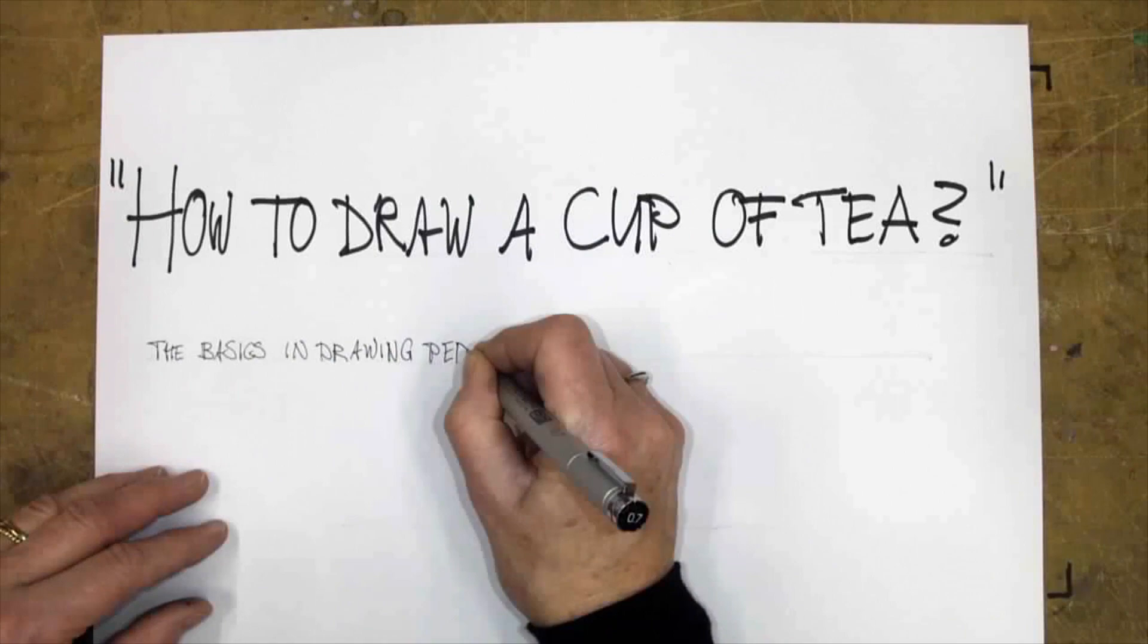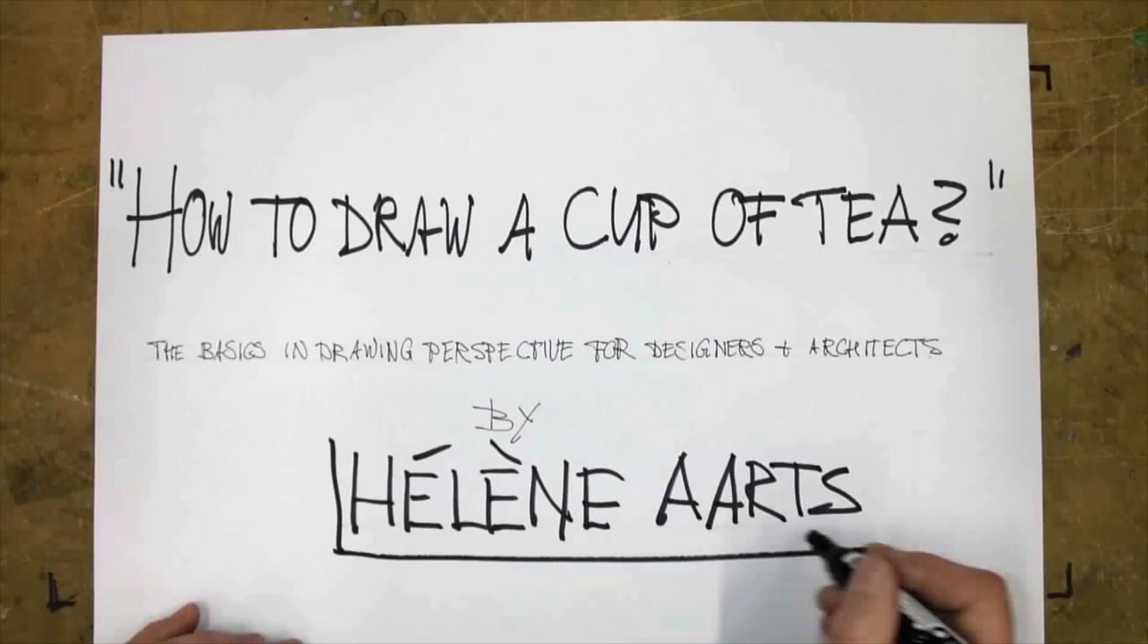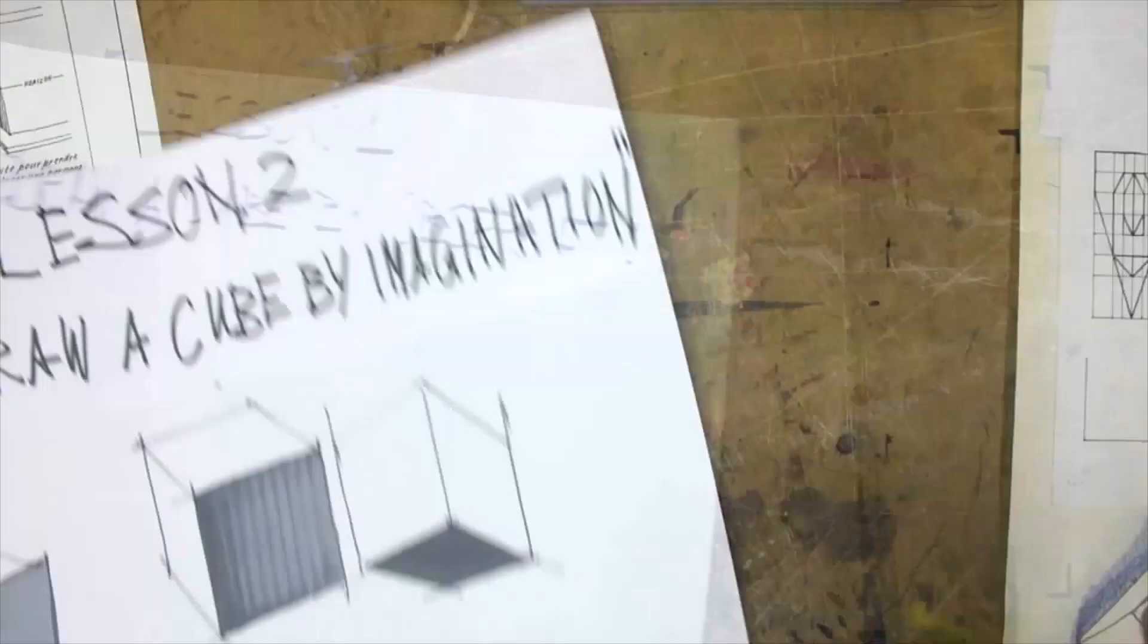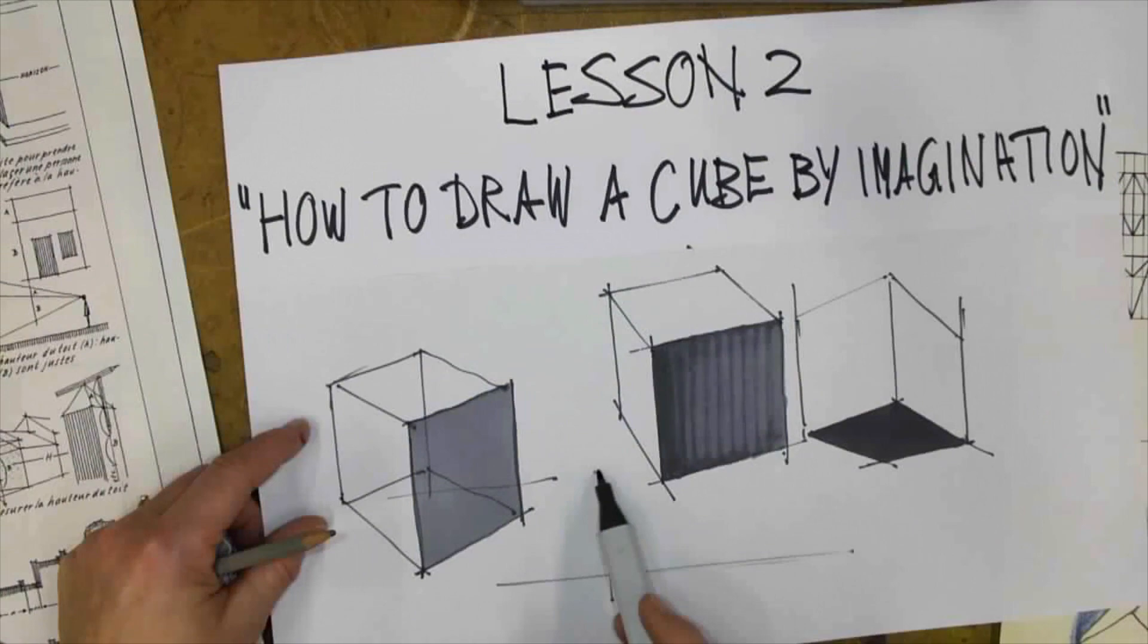How to draw a cup of tea. Welcome to the second lesson of the lecture course. In this course you will learn how to draw the basics of perspective for designers and architects. This second lesson is about drawing a cube by imagination or from memory.